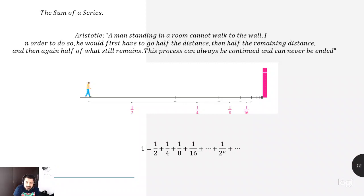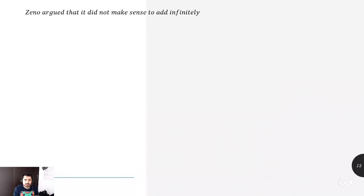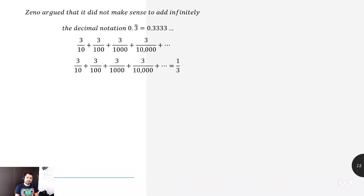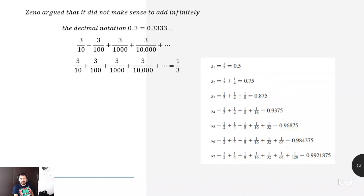So then, we can represent that 1 is exactly equal to 1/2 plus 1/4 plus etc., 1/2^n. So then, the problem is maybe Zeno argued that it didn't make sense to add indefinitely. However, we know already that maybe we have, for example, the decimal notation 0.3 periodic, then you can represent in that way. So then, it's never getting to 0.3 exactly, but it tends to be. So then, at the end of the day, it tends to be 1/3.